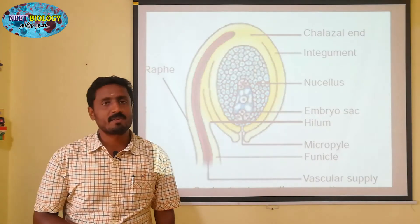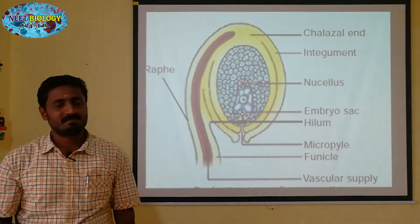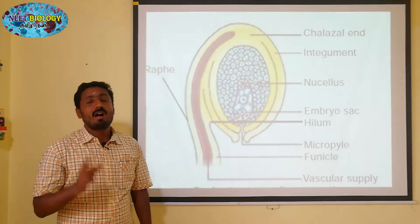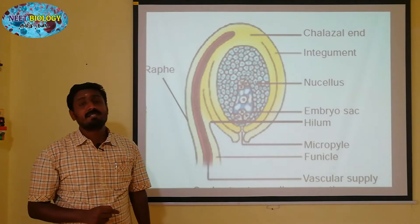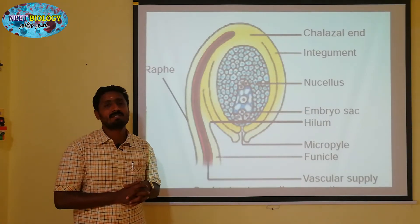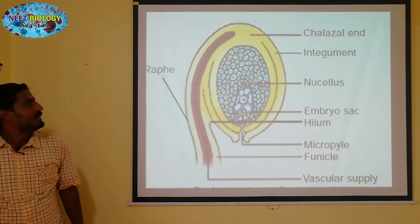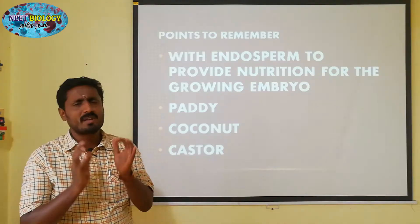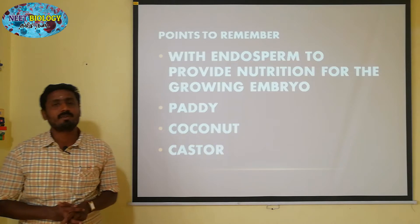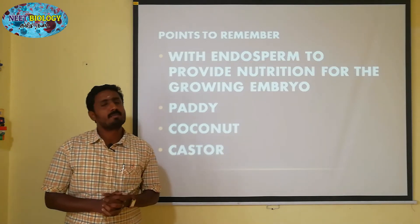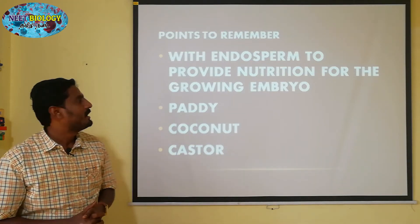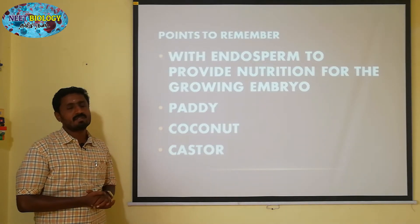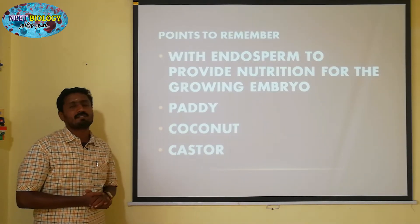All the angiosperms will form the endosperm. First of all, the endosperm is providing nutrition for the embryo. For example, this includes paddy, coconut, and castor.